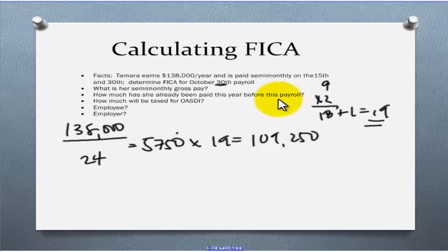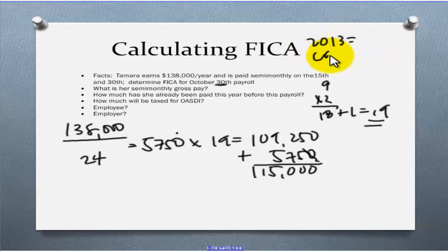That is her cumulative pay so far this year. Now, let's figure out what's her cumulative pay going to be after this October 30th payroll. She's going to get paid again $5,750. We add that to what she's already been paid and we get a total of $115,000. Remember, for our textbook, we're using the 2013 numbers. Our cap for Social Security is $113,700. Well, this $115,000 is over that cap.